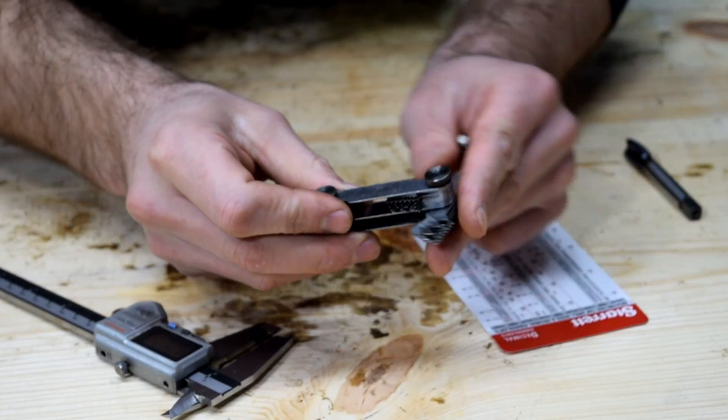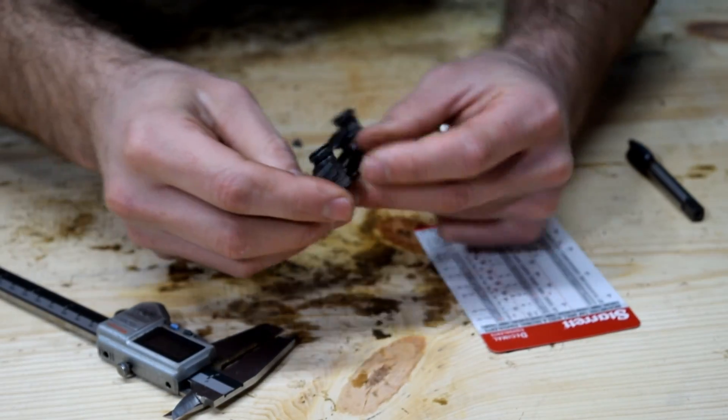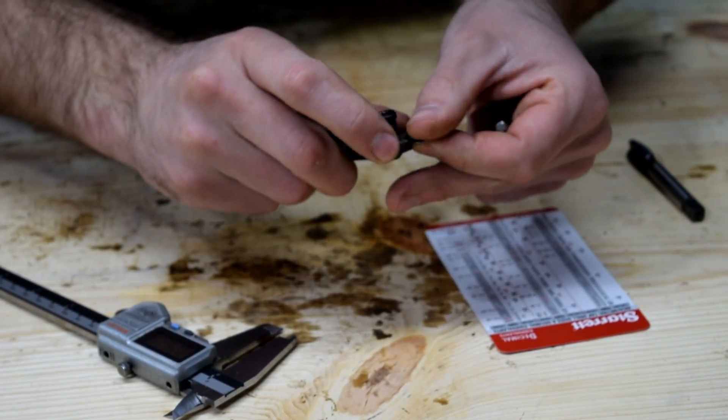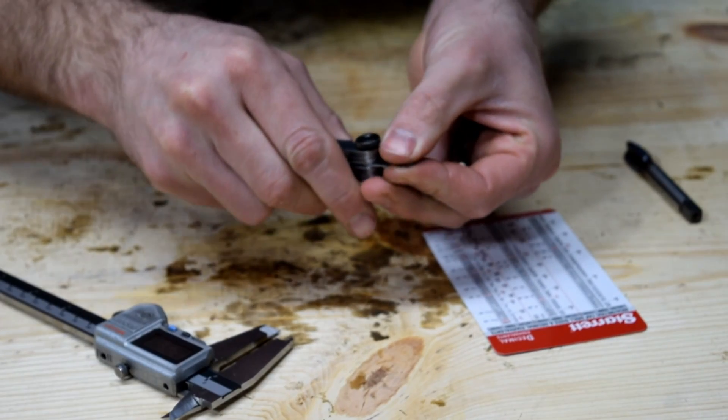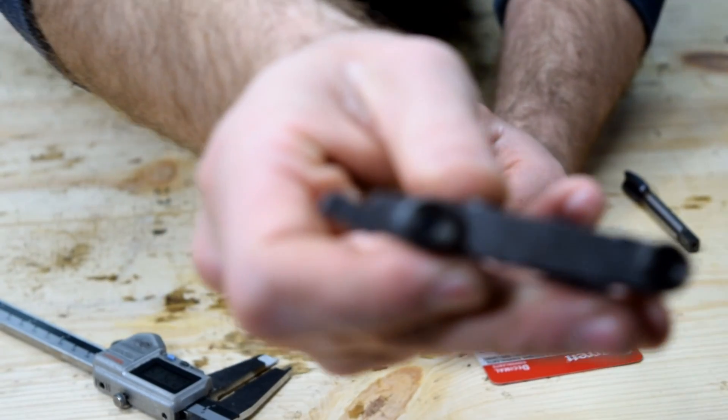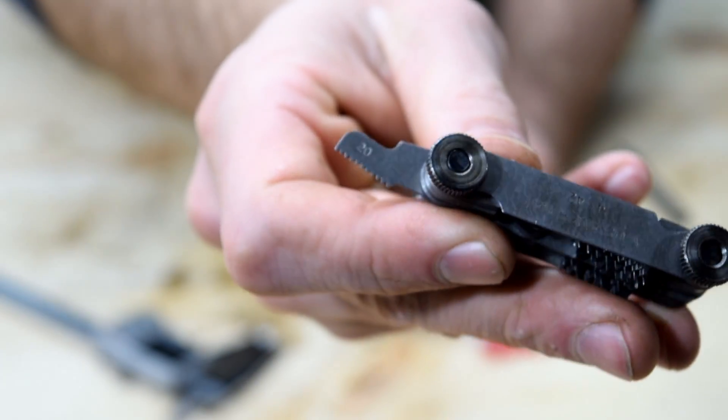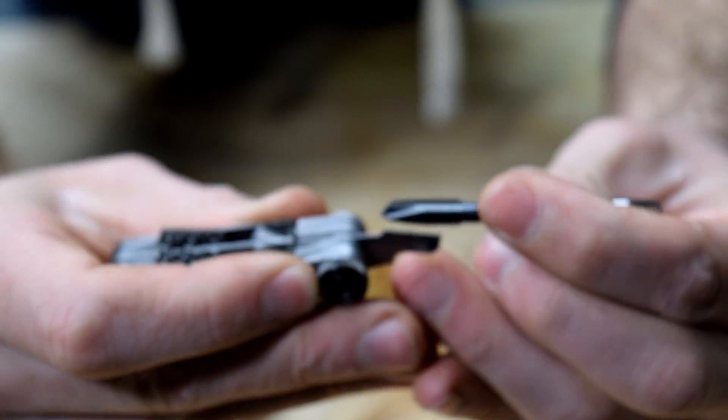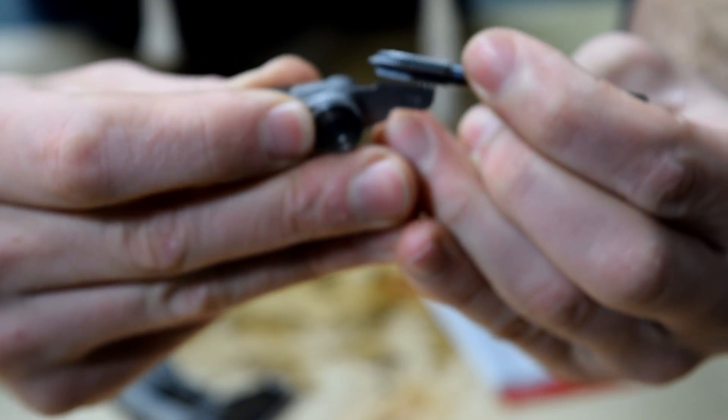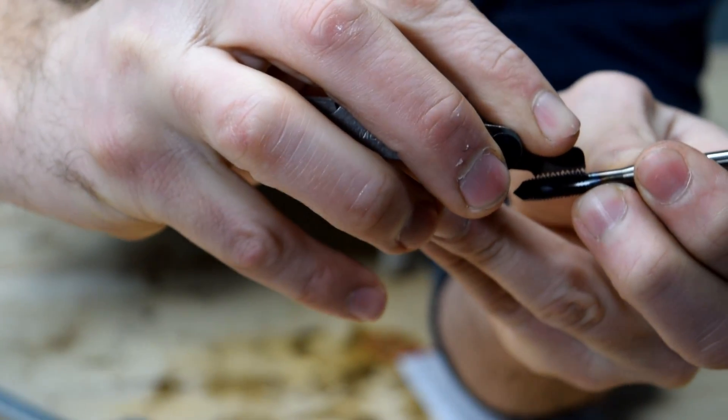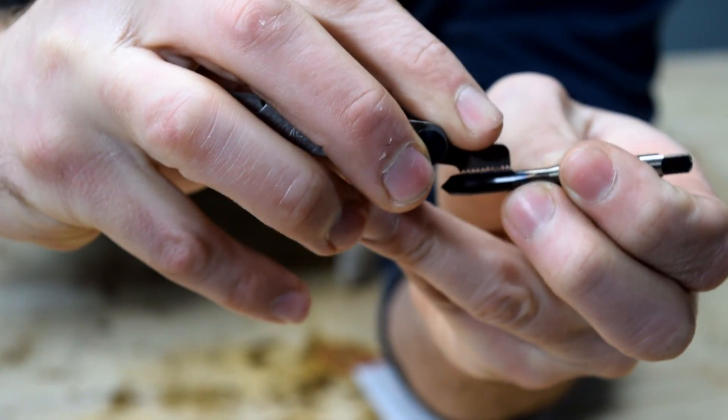So we'll go on our standard side and look for 20 threads per inch. That's 20 threads per inch. We'll get a measurement. Nope, doesn't look like 20 threads per inch.